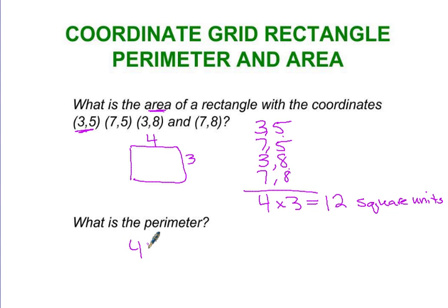What is the perimeter of that? Well, to find perimeter, we have to add all the sides. So add 4 plus 3 plus 4 plus 3, which is 14 units.